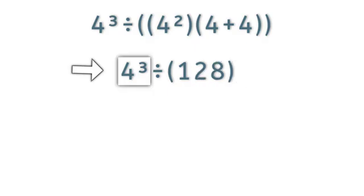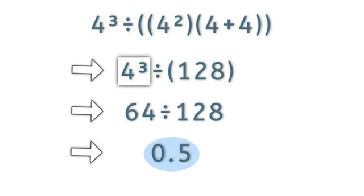Now this 4 cubed can be written as 64. Now we have 64 divided by 128, which equals 0.5. This is our final answer.